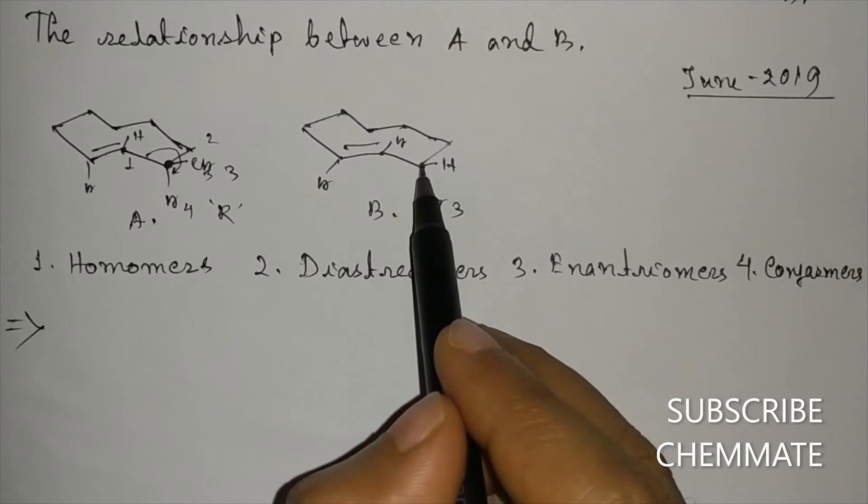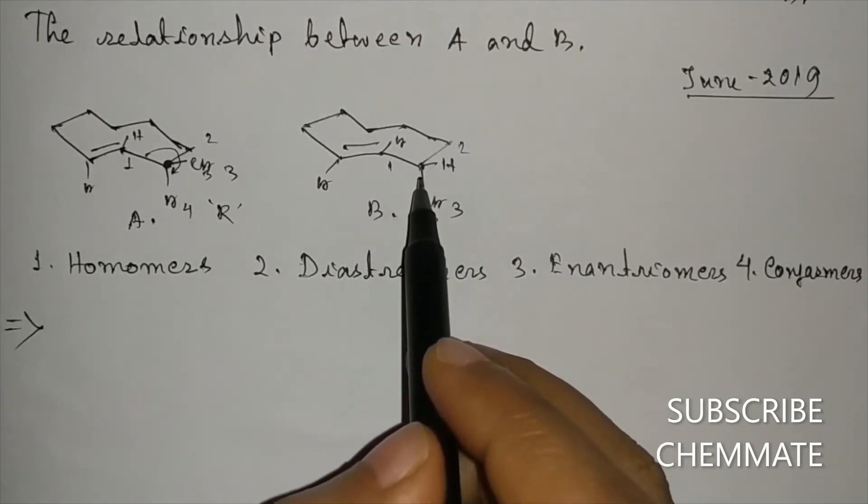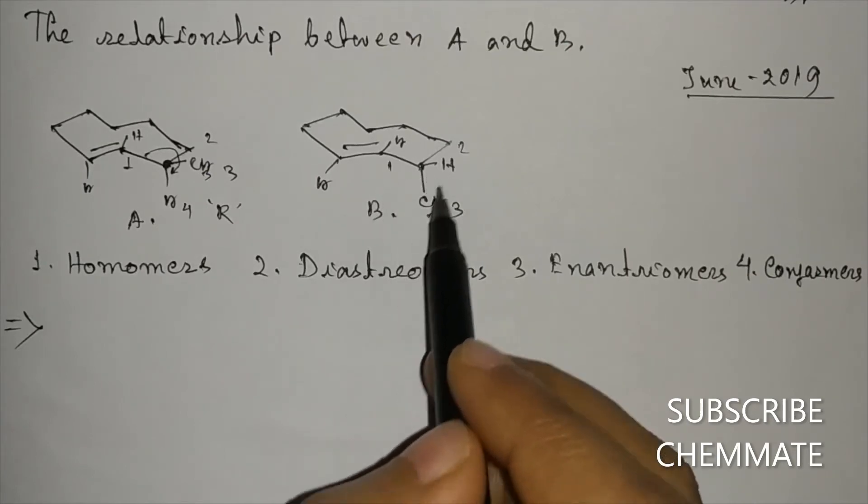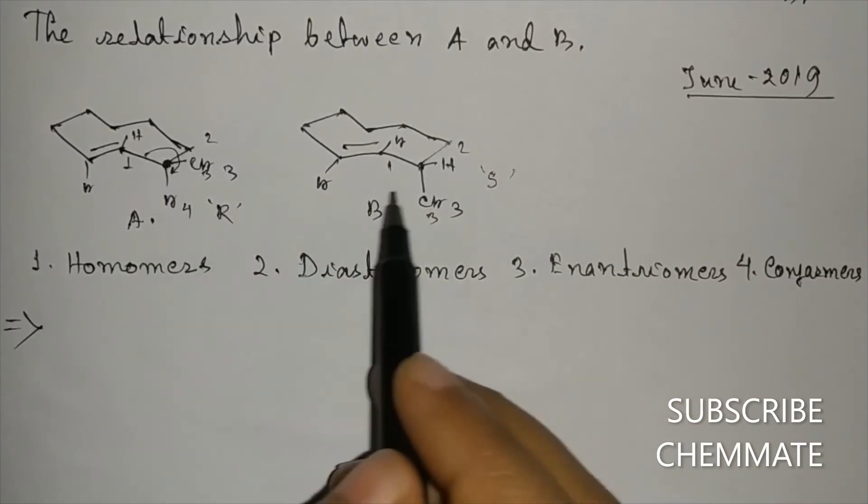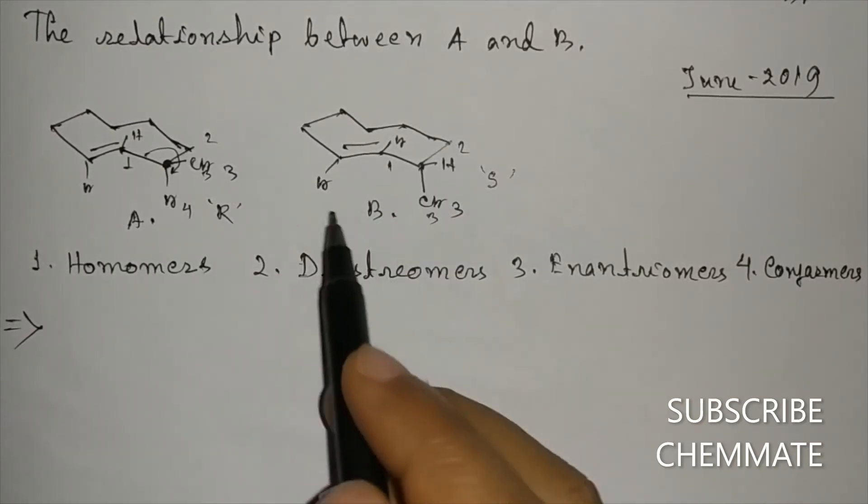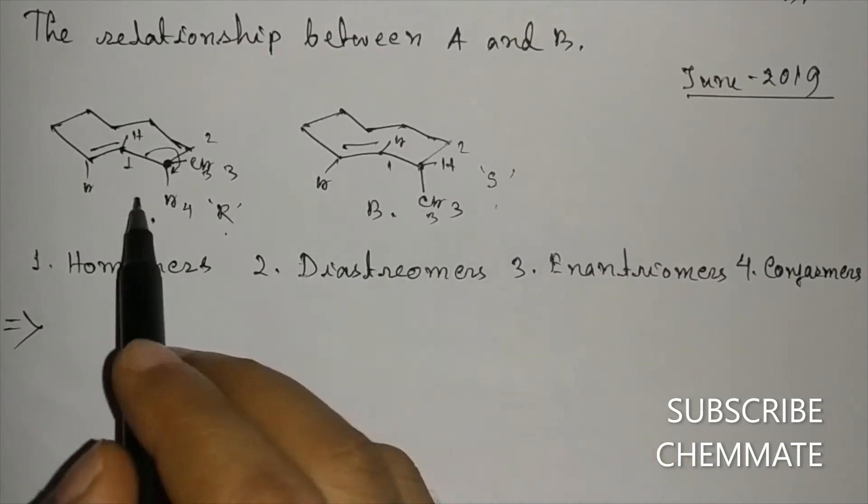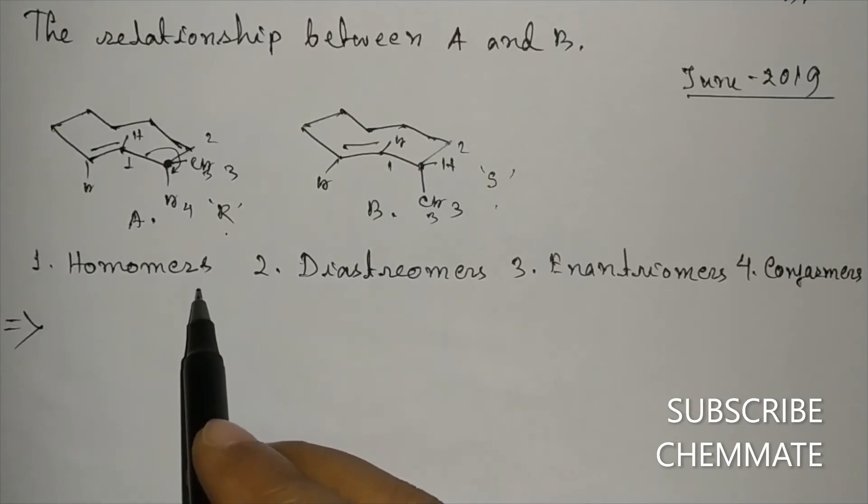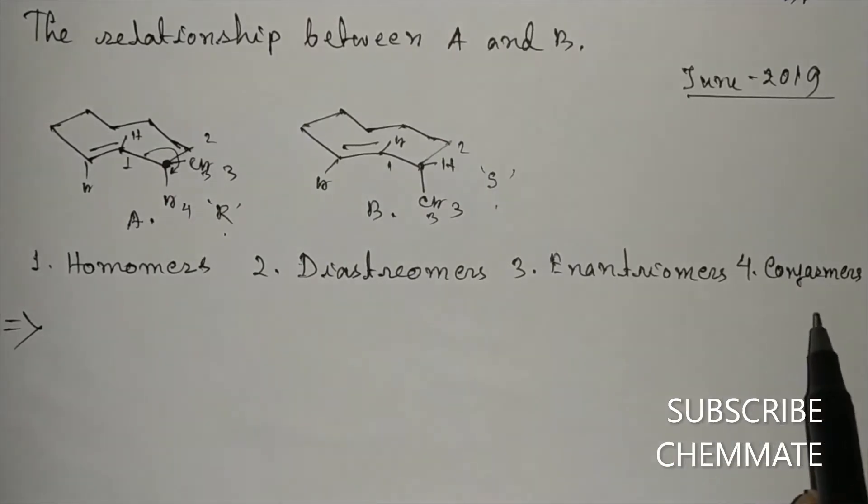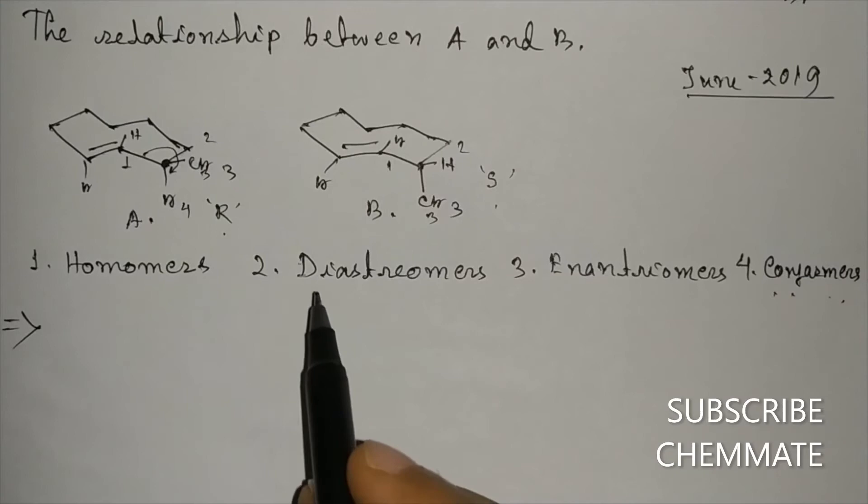Whereas for this, one, two, three - this has anticlockwise rotation, so S configuration. Now the configuration of these two carbon centers is different: one is R configuration, another is S configuration. These two isomers cannot be identical, so they cannot be homomers, and they cannot be conformers because conformers are also homomers.